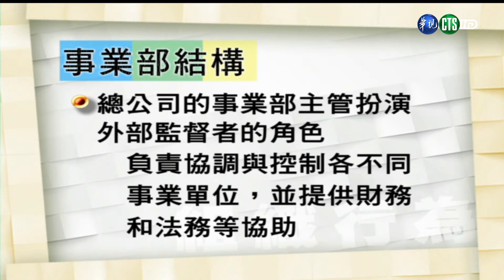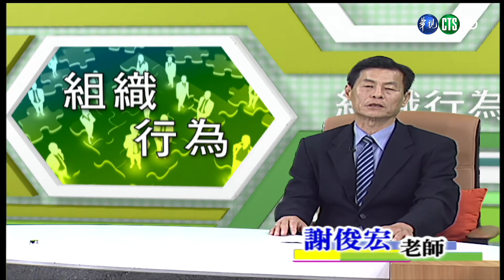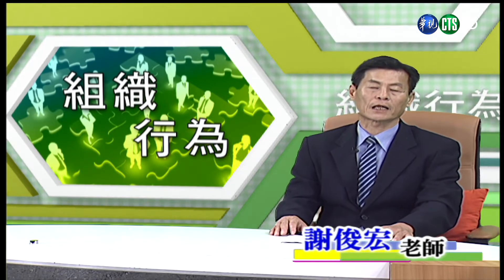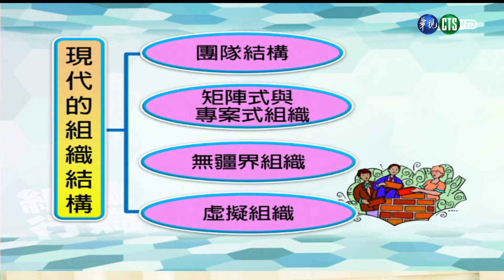一个总公司的事业部主管通常也扮演了外部监督者的角色，协调控制各个不同的事业单位，并提供财务以及法务的协助。介绍完三个传统的组织结构，接着来看看现代的组织结构有哪些。根据研究报告，现代的组织结构大致上有四个类别：团队结构、矩阵式与专案式组织、无边界组织以及虚拟组织。